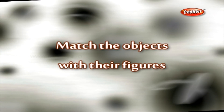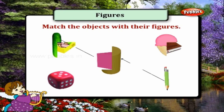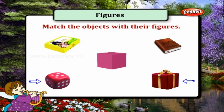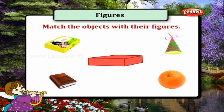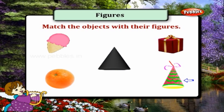Match the objects with their figures. Cucumber and pencil are both cylindrical in shape. Dice and gift box are both cube in shape. Butter packet and book are both cuboid in shape. Orange and apple are both sphere in shape. Birthday cap and ice cream cone are both conical in shape.